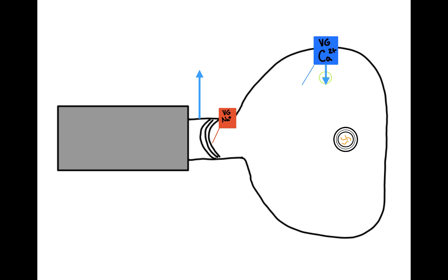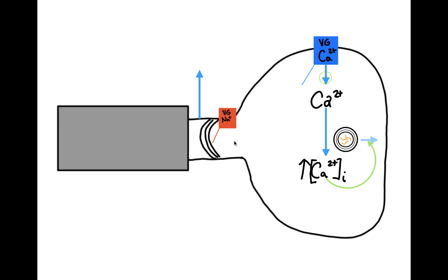Voltage-gated calcium channels allow calcium to flow in, increasing the intracellular calcium level, which facilitates the fusion of the vesicle with the membrane and the release of neurotransmitters into the synapse.